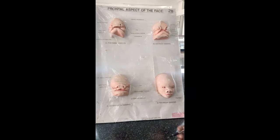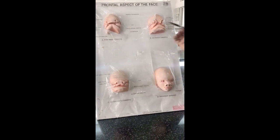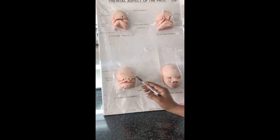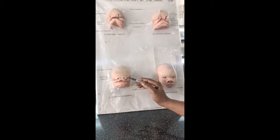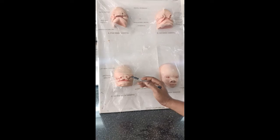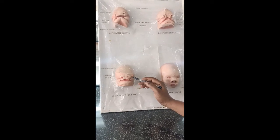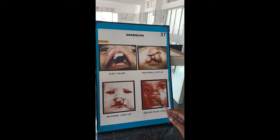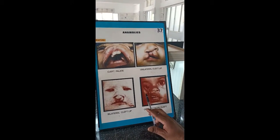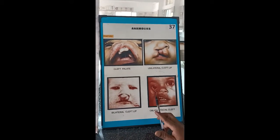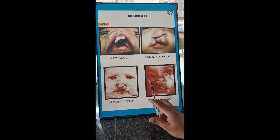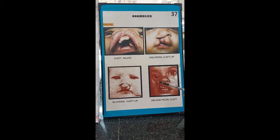If there is any failure to fuse, which leads to clefts — let's look at those now. The maxillary process and the lateral nasal process must fuse; if there is failure in that fusion, it leads to an oblique facial cleft. The lateral nasal process and the maxillary process have to fuse, and failure of that fusion leads to the oblique facial cleft.